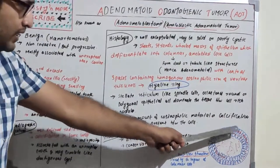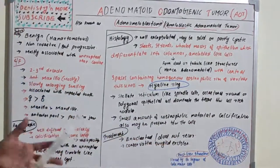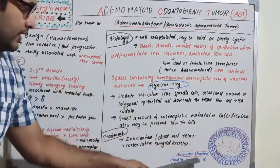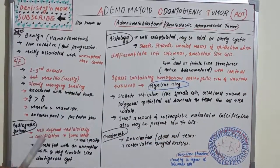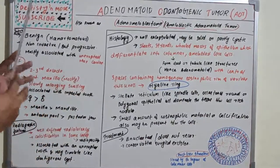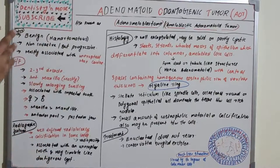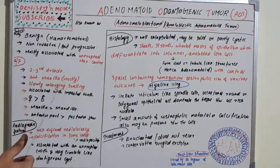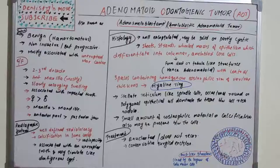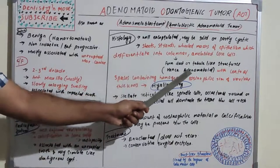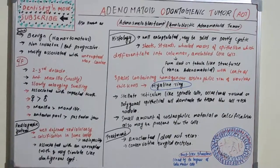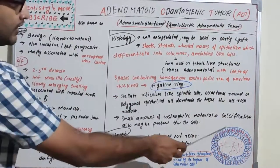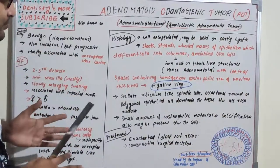You can observe columnar-type cells lining duct-like structures with columnar cells aligned at the periphery. These columnar cells form the duct or tubule-like structures — that is why it has the peculiar name 'adenomatoid tumor.' The columnar cells differentiate and arrange themselves to create duct-like or tubule-like structures.